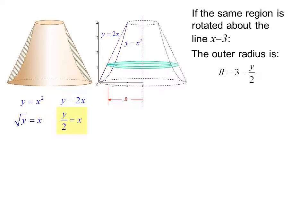The outer radius r is now 3 minus y over 2. That is 3 minus the x distance to the straight line, which would be right there. The inner radius is 3 minus radical y or 3 minus the x distance to the curve.